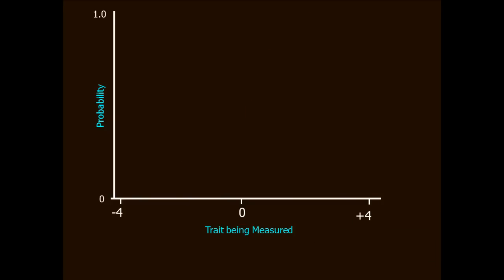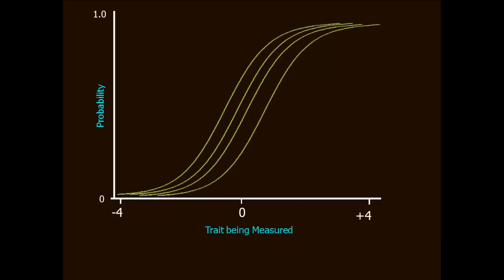Remember earlier in the module, I mentioned that Rasch models only estimate item difficulty. They don't estimate item discrimination. So, if you lined up a bunch of item trace lines or maybe four item trace lines from a Rasch model, they might look like this. They have different difficulties, but the slopes for all the items are the same.